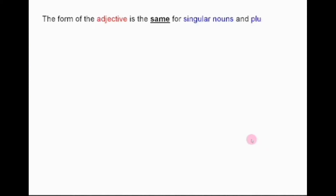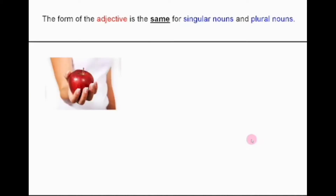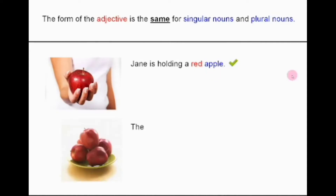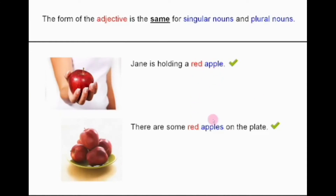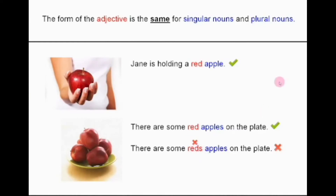The form of the adjective is the same for singular nouns and plural nouns — it's very important. For example, Jane is holding a red apple. Here, the noun is singular: apple. Adjective is red. Now look at the second example: there are some red apples on the plate. You can see the noun is in a plural form, but the adjective is the same as in the first example. So, this incorrect form does not exist in English.